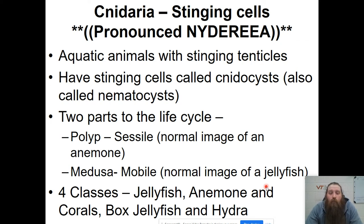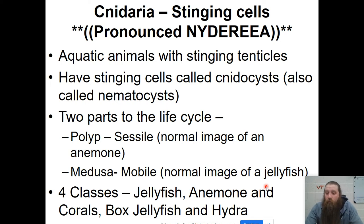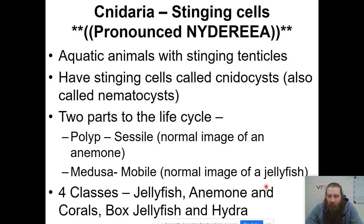The cnidarians have two parts of their life cycle. They have a polyp stage and a medusa stage. If you see an anemone, that's the polyp stage — it's sessile and doesn't move. The medusa stage looks kind of like a jellyfish; that's the mobile stage. Remember, animals have to move at some point. There are four main classes of cnidaria: jellyfish, anemone, corals, box jellyfish, and hydra.